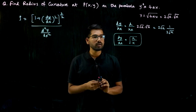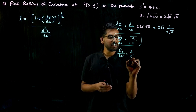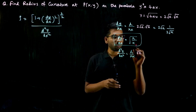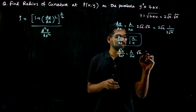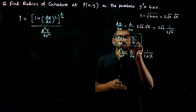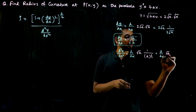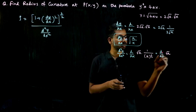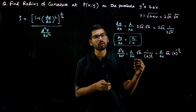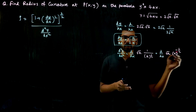How do we find d²y/dx²? We need to differentiate dy/dx with respect to x. So d²y/dx² = d/dx of √a·(1/√x). Now 1/√x is x^(−1/2). If x^(1/2) moves from denominator to numerator, the power changes sign, giving x^(−1/2). This makes it easier to differentiate using the power rule: d/dx of x^n = n·x^(n−1).